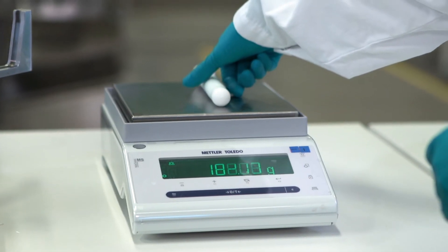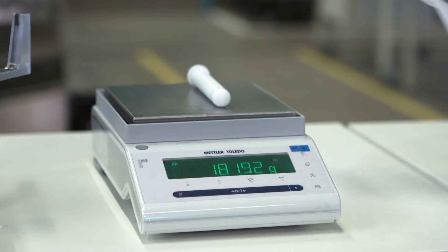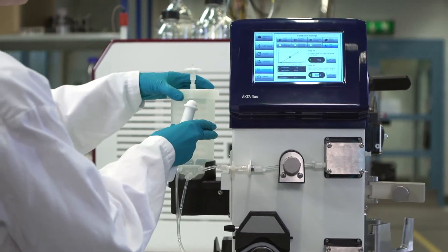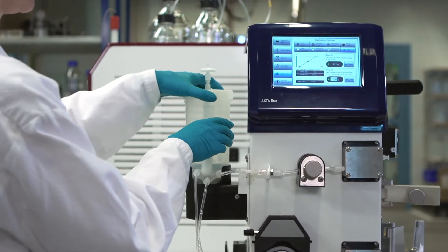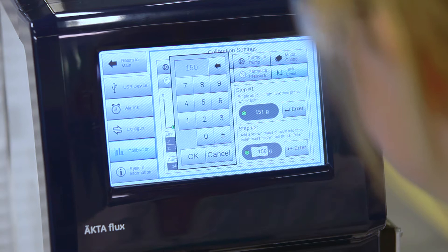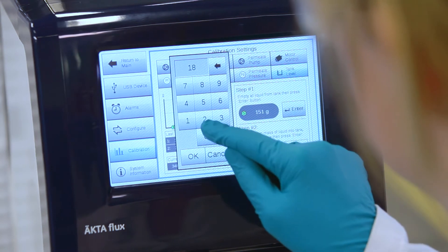Weigh an amount of fluid or small item on a separate scale and note the weight. Pour the fluid or place the item in the reservoir. Enter the known weight on the touchscreen under step 2 and press enter.